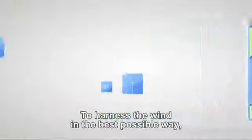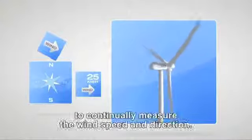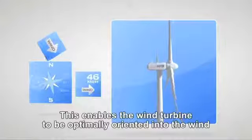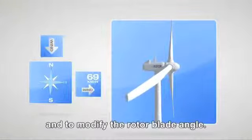To harness the wind in the best possible way, equipment is integrated into the nacelle to continually measure the wind speed and direction. This enables the wind turbine to be optimally oriented into the wind and to modify the rotor blade angle.